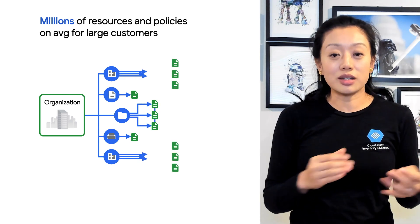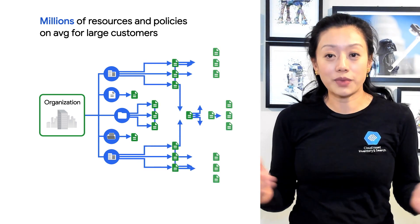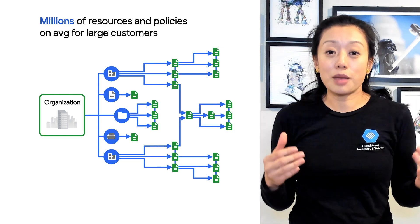So how can you see all the things you have on cloud at the same time? How can you keep an eye on all the changes as they happen so you don't miss a threat? How do you answer questions that seem simple but are actually challenging, like how many VMs do I have in my org, who can change my billing accounts, or what service account keys are older than 60 days?